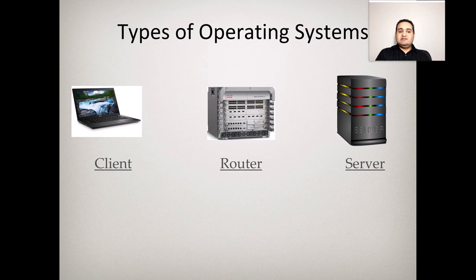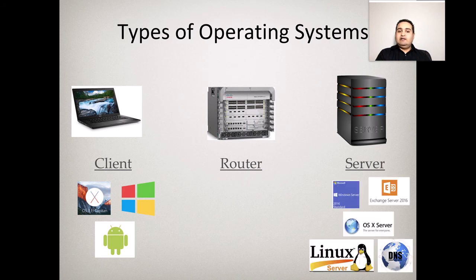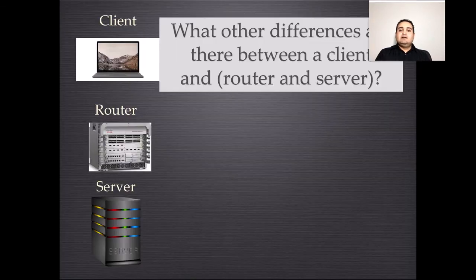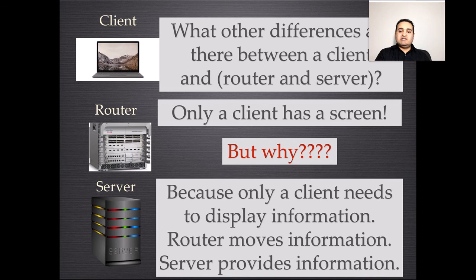Operating system types include Mac iOS and OS X, Windows 10, Windows 7, Android, and server operating systems like Exchange Server, Linux, Unix, and Windows Server. The router runs Cisco IOS software. A key difference between client, router, and server is that the client is the only component with a screen interface. Routers and servers do not have screens because they do not need to display information.